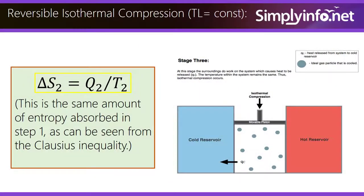Delta S2 equals Q2 by T2. This is the same amount of entropy absorbed in step 1 and can be seen through the Clausius inequality.